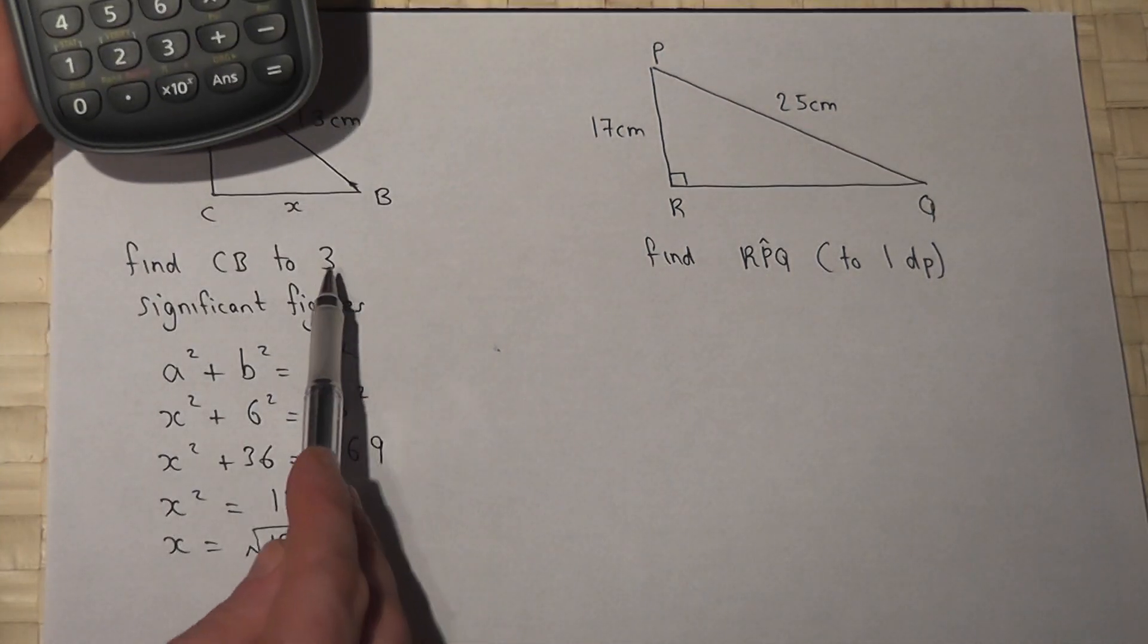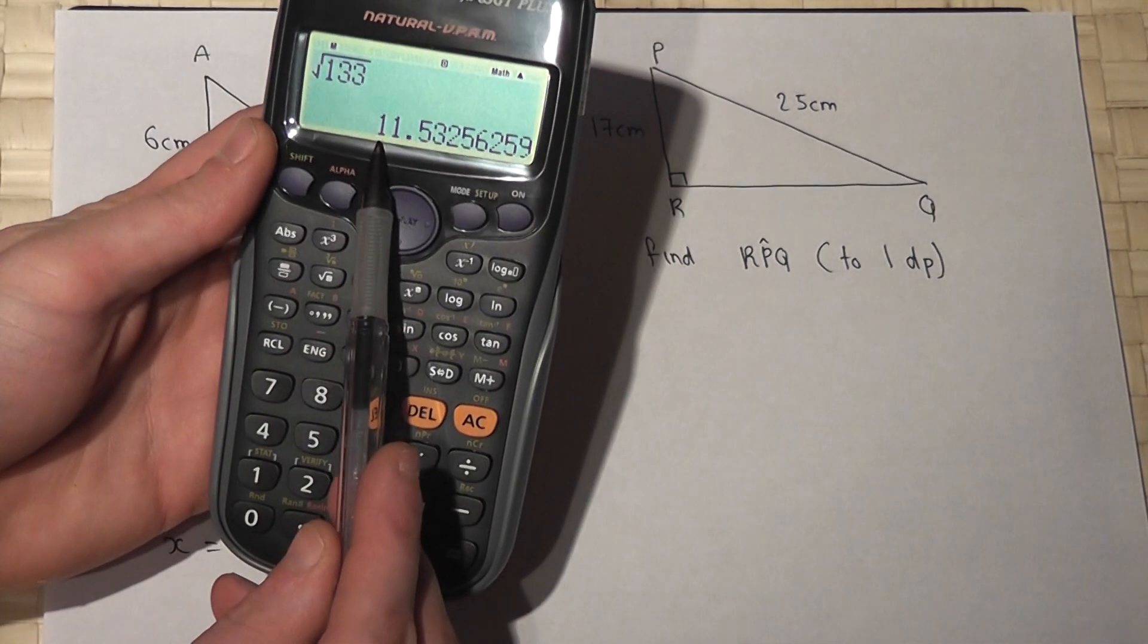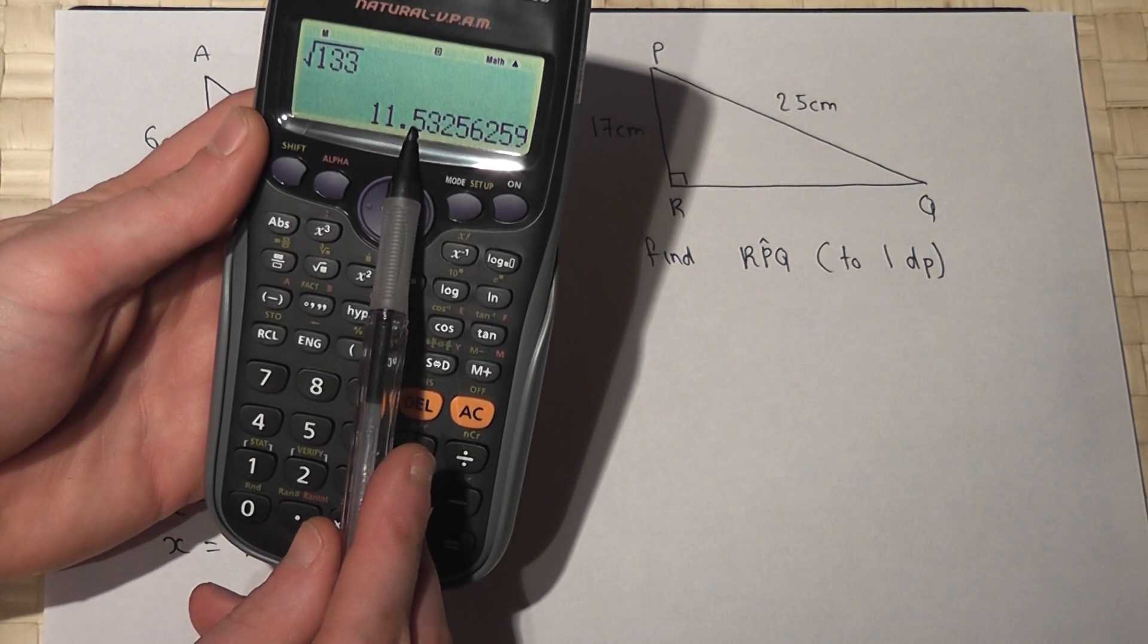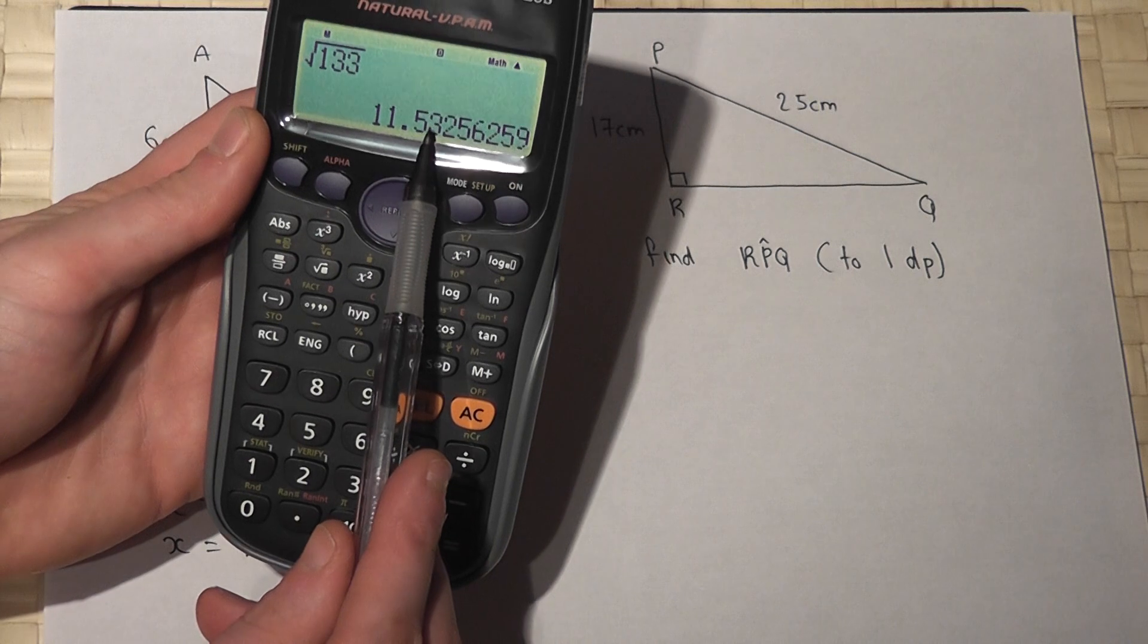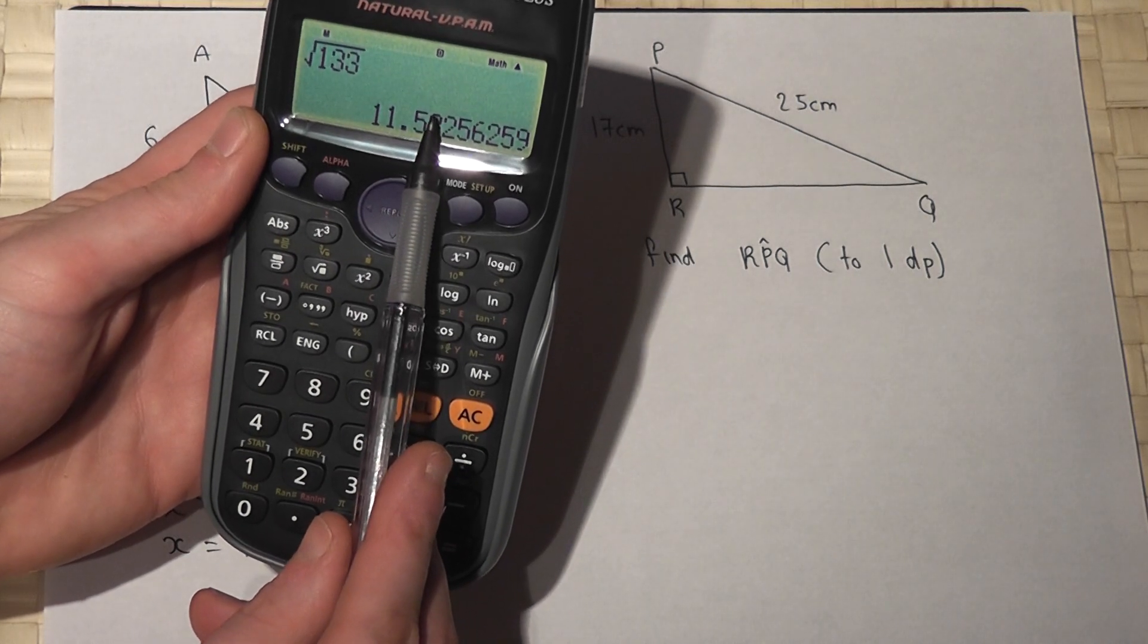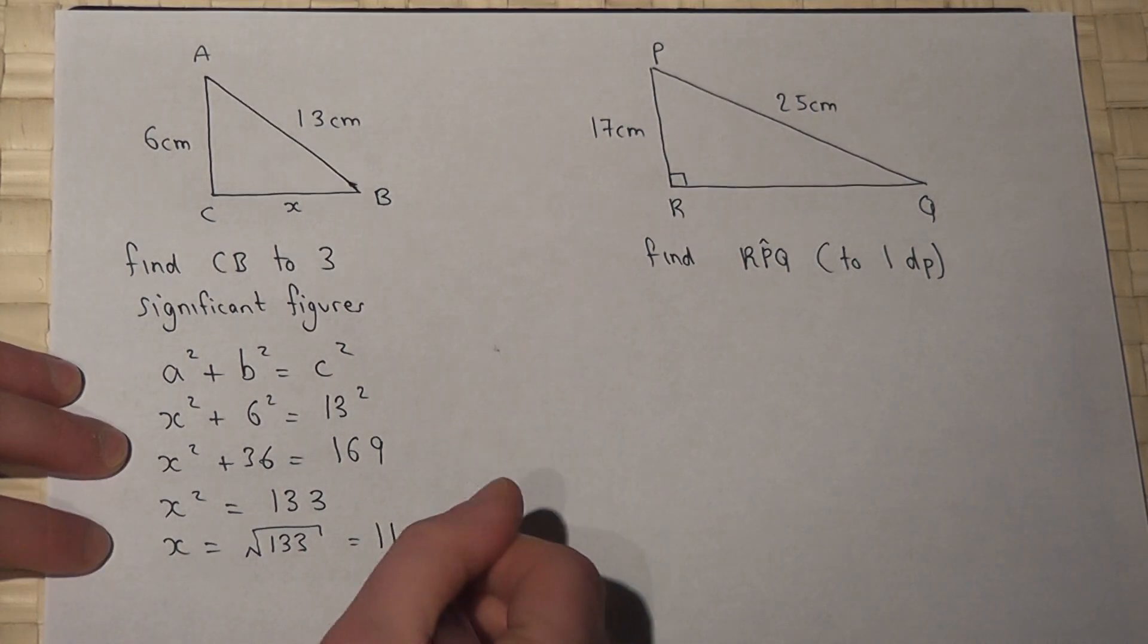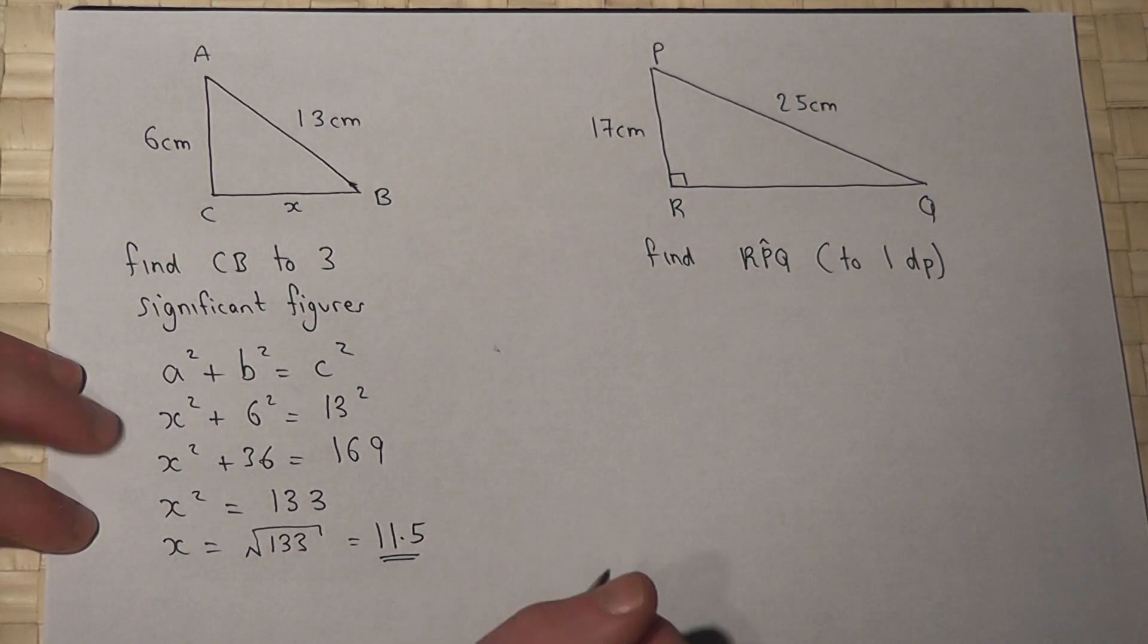Now we want this to three significant figures. So 1, 2, 3, that's the third significant figure. After it's a 3, that's less than 5, so we don't round up, it's 11.5. So x is 11.5 to 3 significant figures.